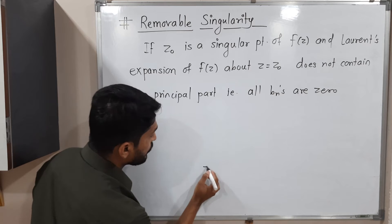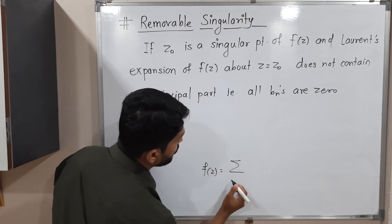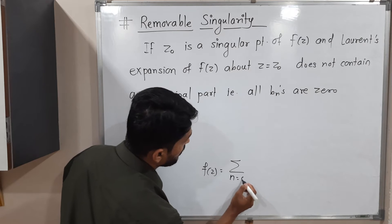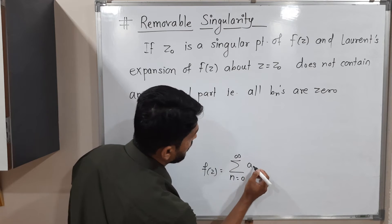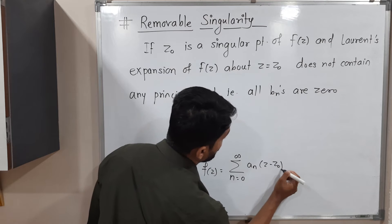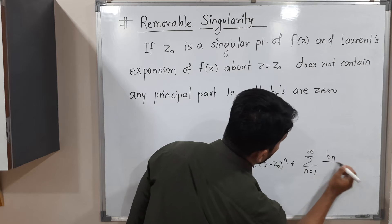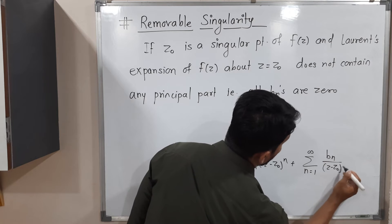So we know that if you have f(z) and if you want to express as a Laurent series, then we write in this way: summation 0 to infinity an(z - z0)^n, plus summation n running from 1 to infinity, bn/(z - z0)^n.